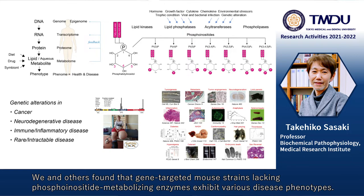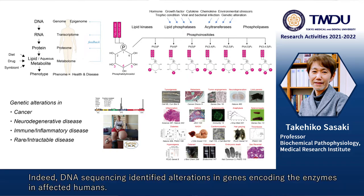We and others found that gene-targeted mouse strains lacking phosphoinositide metabolizing enzymes exhibit various disease phenotypes. Indeed, DNA sequencing identified alterations in genes encoding the enzymes in affected humans.